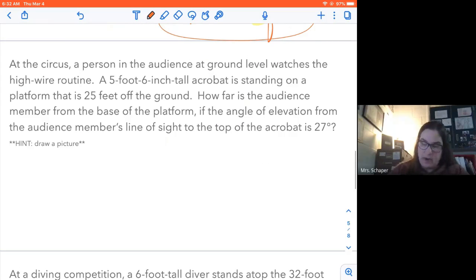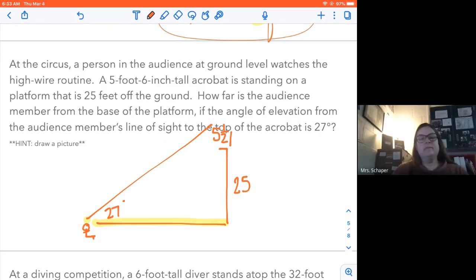Here we go. Next one. At the circus, a person in the audience is at ground level. All right. So I'm going to draw this person. They're sitting down here, right? They're at ground level. And they're watching a high wire routine. A five foot, six inch tall acrobat standing on a platform. Here's my platform. It's 25 feet off the ground. This person is five and a half feet up here. How far is the audience member from the base of the platform? If the angle of elevation from the audience member's line of sight to the top of the acrobat is 27 degrees? So this person sitting in the audience is looking up 27 degrees. It's a 27 degree elevation. There we go.